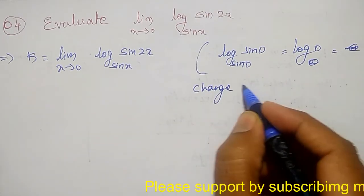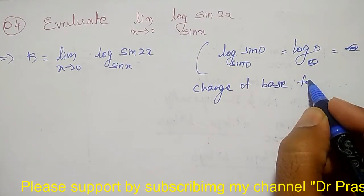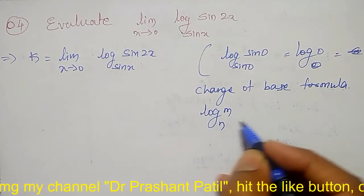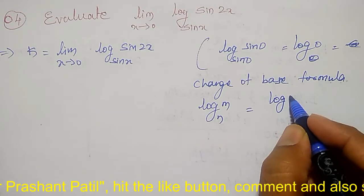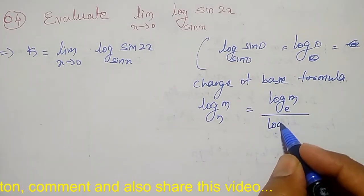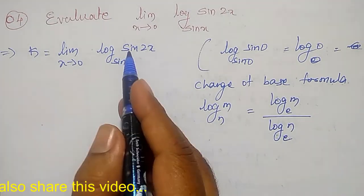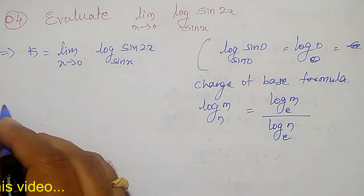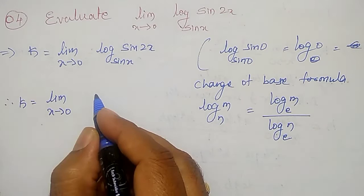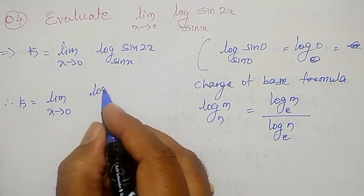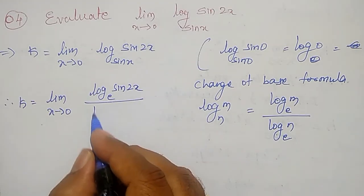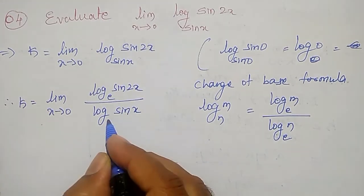The change of base formula states that if it is log of m to the base n, then I can write it as log m to the base e divided by log of n to the base e. Let me apply this formula here. Therefore, k is equal to limit as x tends to 0 of log of sin 2x to the base e divided by log of sin x to the base e.